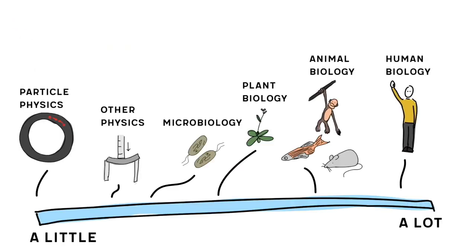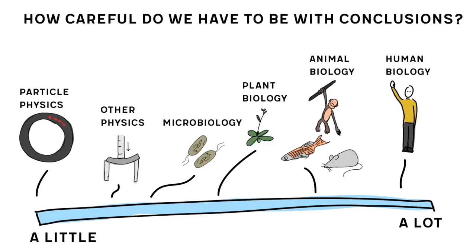What this scale tells us is how careful we have to be with conclusions from any of these research areas. We have to apply a much higher skepticism when looking at single studies on human food than when we study how hard a rock is. If I'm interested in stuff on the right end of the spectrum, I'd rather see a couple of studies pointing at the conclusion, whereas the further I get to the left-hand side, the more I trust single studies. That still doesn't mean that there can't be mistakes in particle physics, but I hope you get the idea.